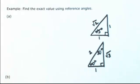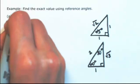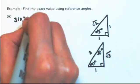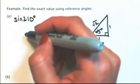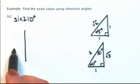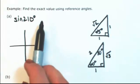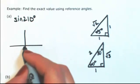Okay, so using these triangles, let's find the exact value using reference angles. For example, let's say I have the sine of 210 degrees. So the first thing I'm going to do is find the reference angle. So I'm going to draw this angle where it is. So 210 degrees is in the third quadrant.